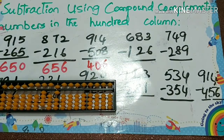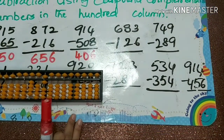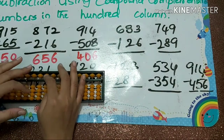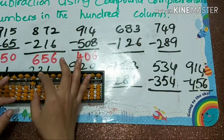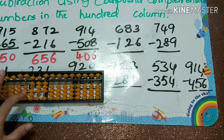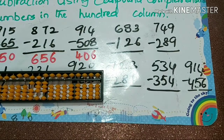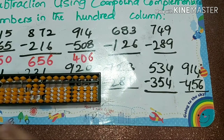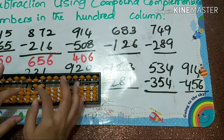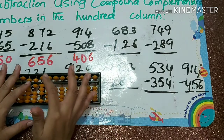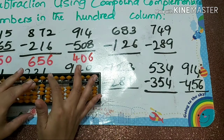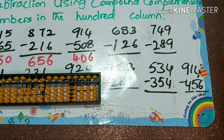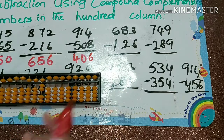Next one: 683 minus 126. Minus 1 you can do directly, minus 2 also we can do directly. Next we have to do minus 6 in the one's place — papa down, mama down, baby's down. Answer is 557.